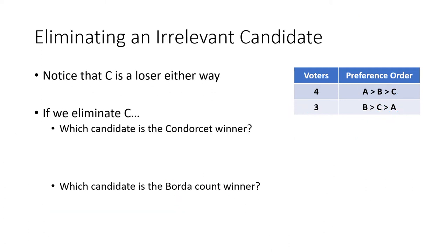Now I want to continue with this example because C was a loser either way. We know we don't have the Condorcet winner criterion satisfied, but I want to illustrate another way this election method is unfair. C was not the Condorcet winner and not the Borda count winner. So let's eliminate C — nobody really likes C — and imagine C is just not there anymore. Now let's think about who the Condorcet winner and Borda count winner would be.